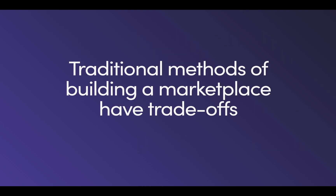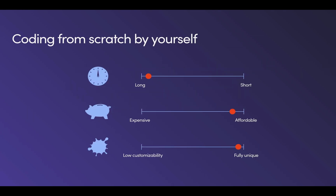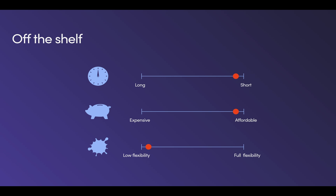Traditional methods of building a marketplace force a trade-off on these factors. Coding from scratch gives you flexibility, but it will take a long time. Paying an agency will speed things up, but it will be expensive. Using an off-the-shelf solution, such as SharedWide Go, is usually faster and more affordable, and for most ideas probably the best place to start. However, it might have limited flexibility in looks and functionality, either right away or at some point in the future.